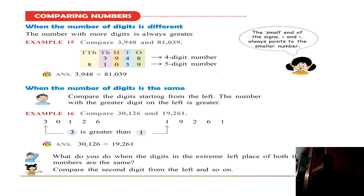Compare 3,948 and 81,039. First, we have to count the number of digits. The first number has 4 digits and the second number has 5 digits. The number that has the more number of digits is the greatest number. The number with more digits is always greater. That means here, 81,039 has 5 digits, so that will be the greatest number.